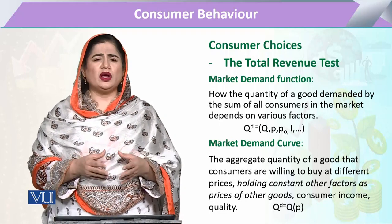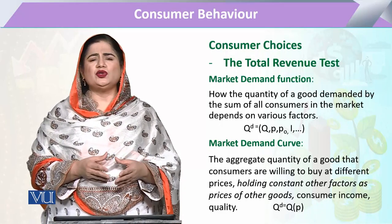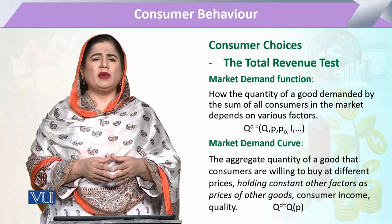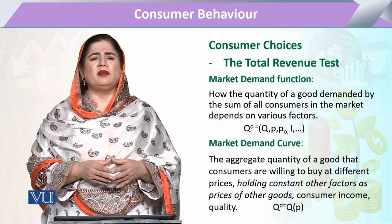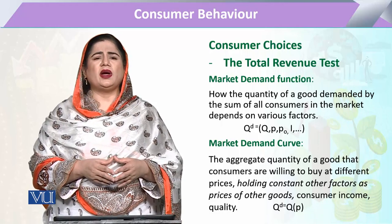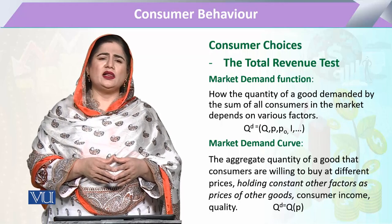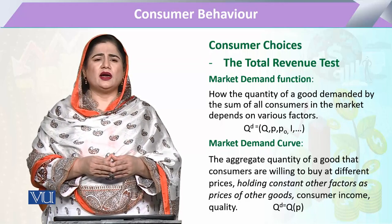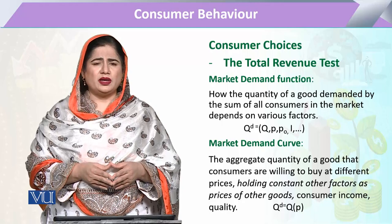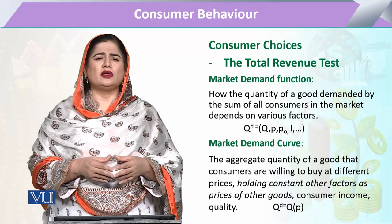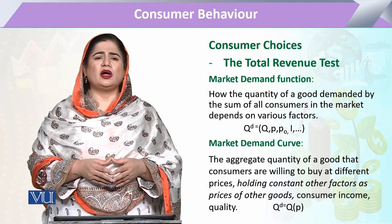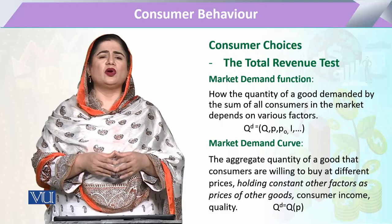When we aggregate individual demand functions we get the market demand function. Like the consumer's demand function, the market demand function entails all the factors we have already studied: the market demand of a commodity depends upon its own price, the price of other goods, and the income of the people who are going to purchase it.